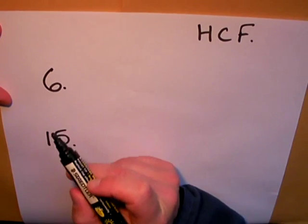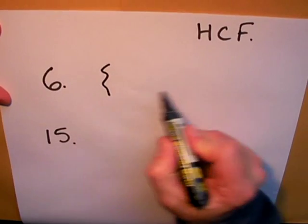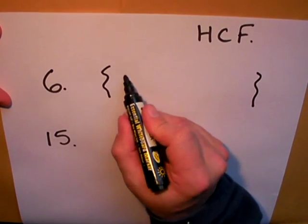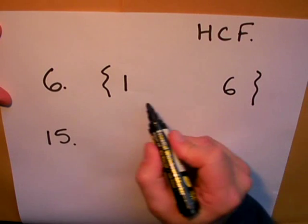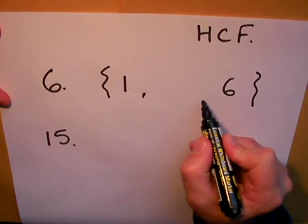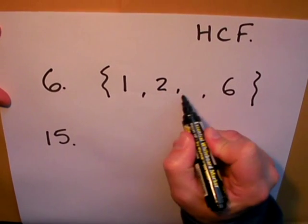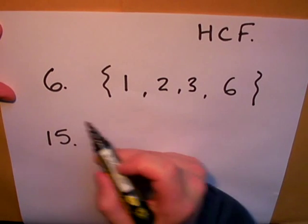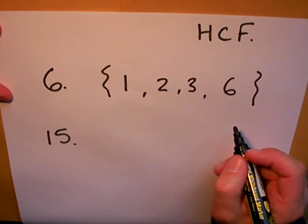The factors of 6 I'm going to write down in these brackets here in pairs. 1 times 6 is 6, so 1 and 6 both divide exactly into 6. I also know that 2 and 3 multiply together to make 6, so 2 and 3 are two more factors of 6. These are all the factors of 6.